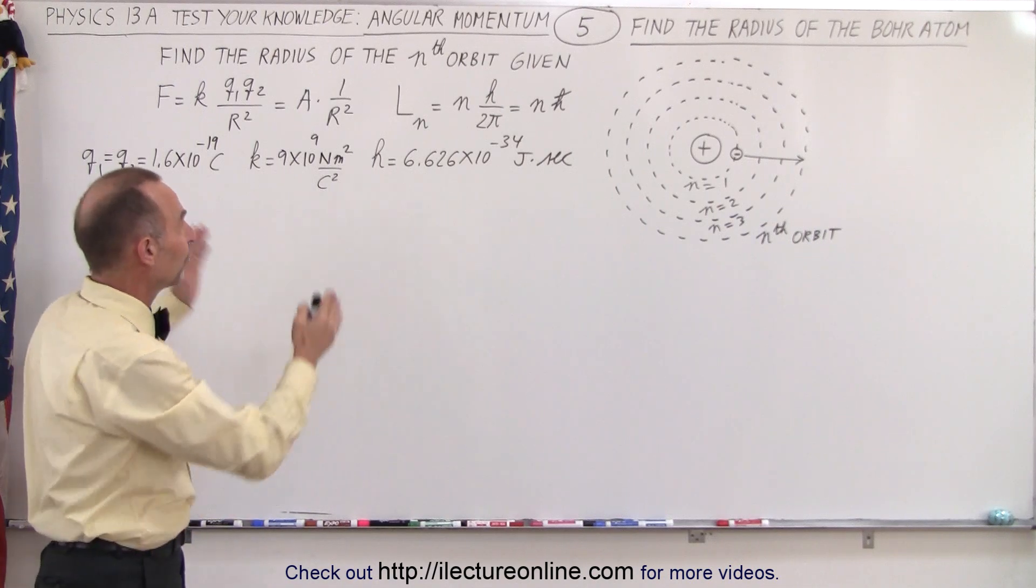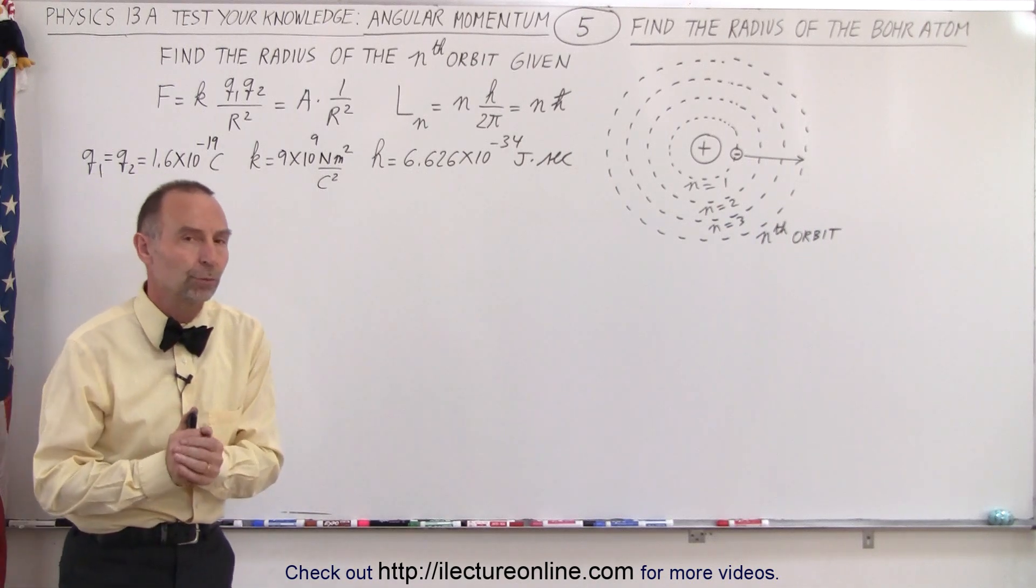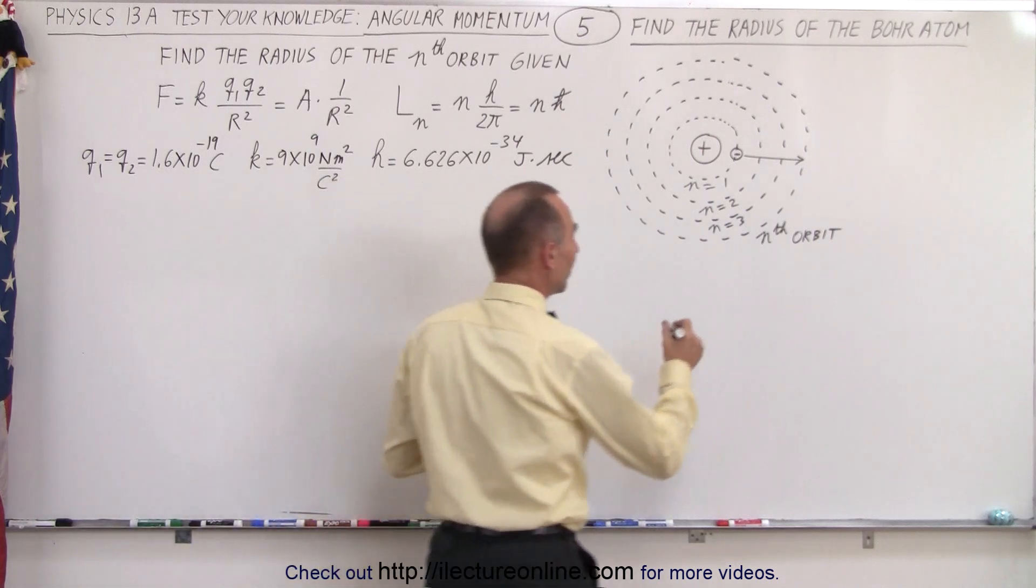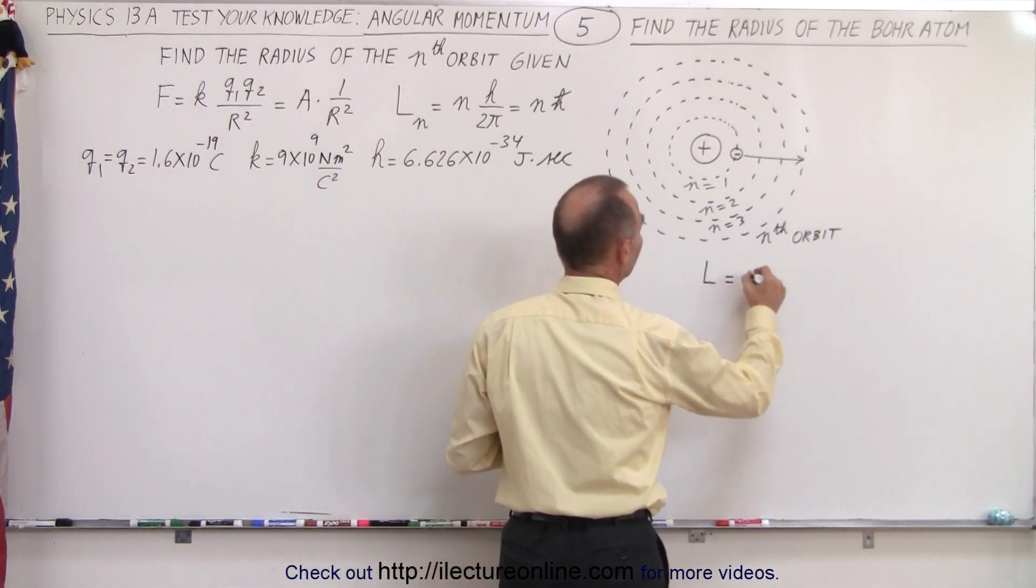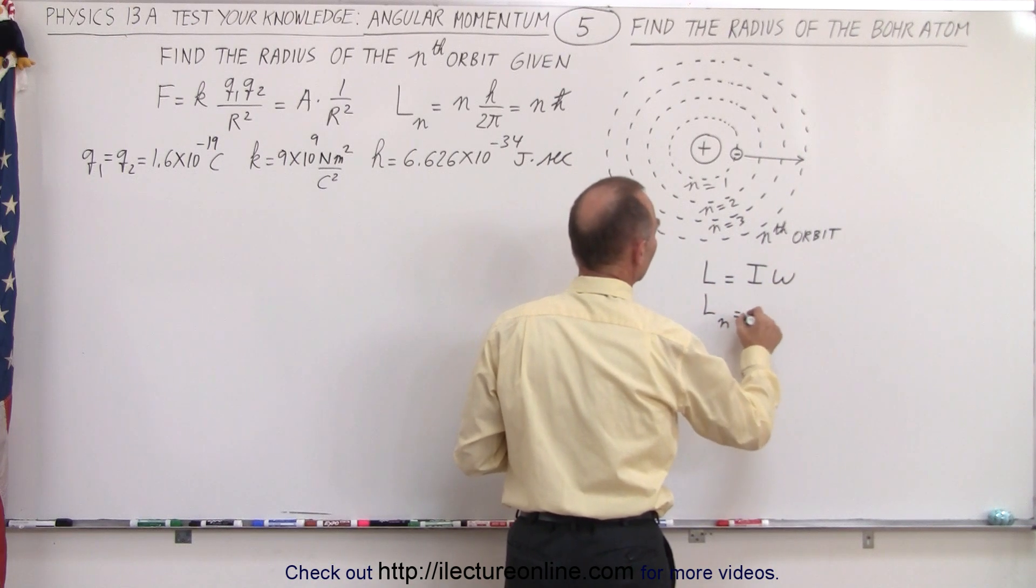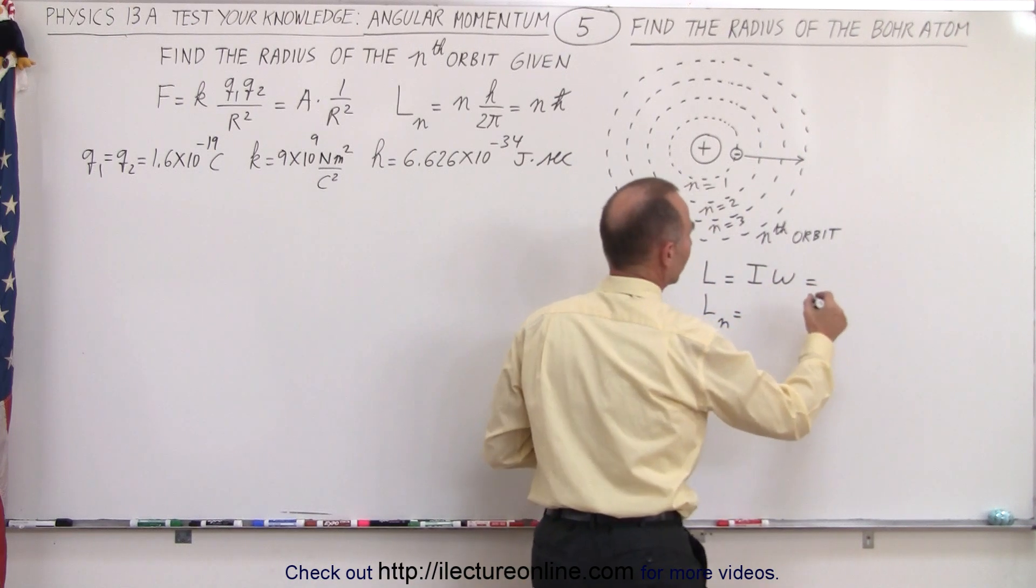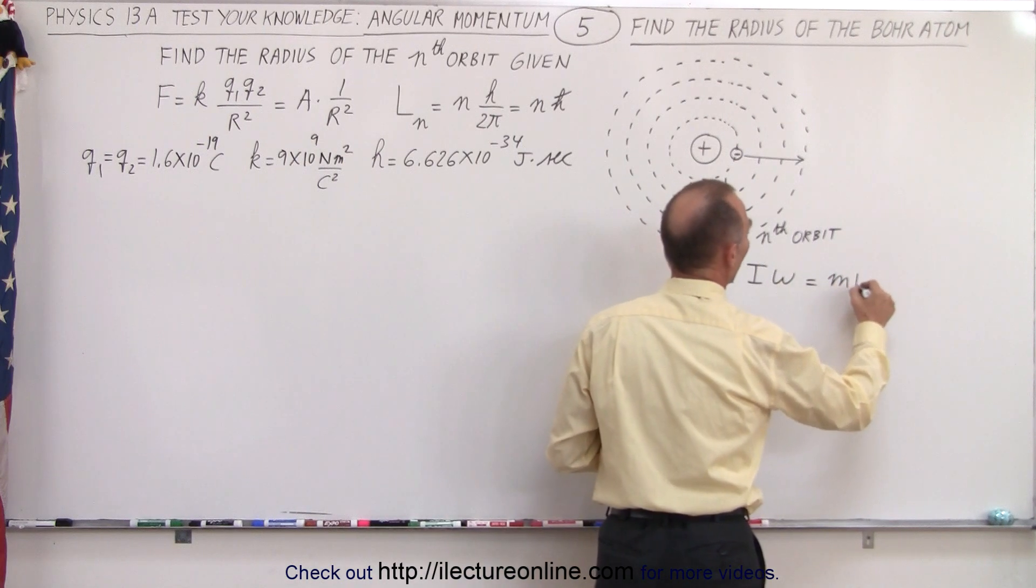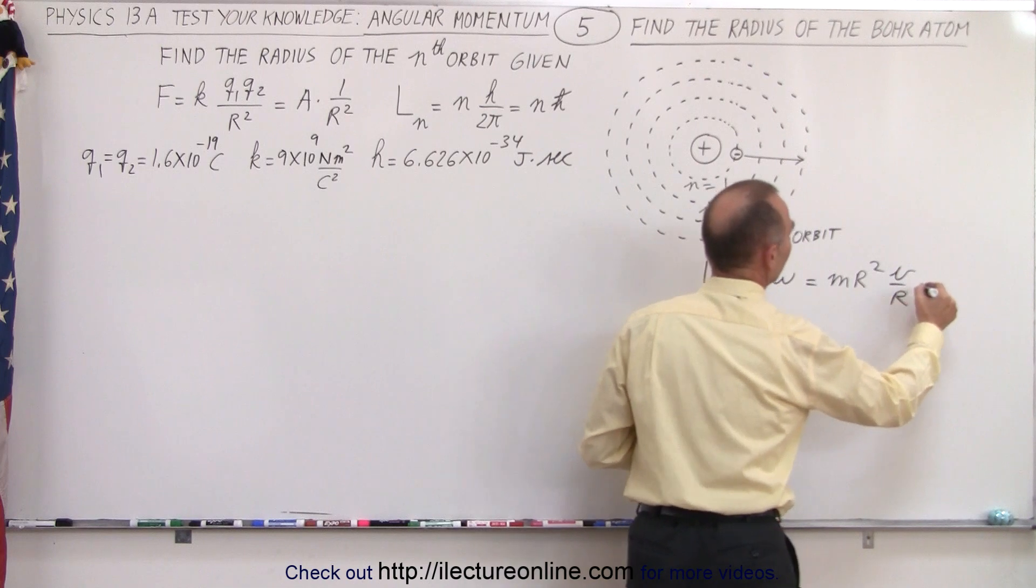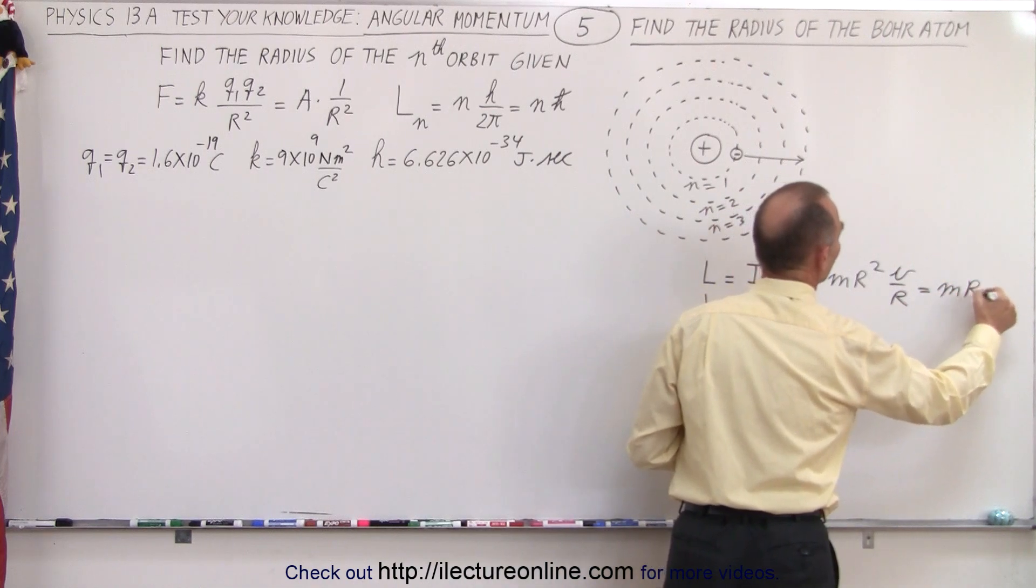So how, from this information, can we determine the radius of the orbit? What we can do is write that the angular momentum is equal to I times omega. We can write this as I would be mr squared, and omega would be v over r, so this can be written as mrv.